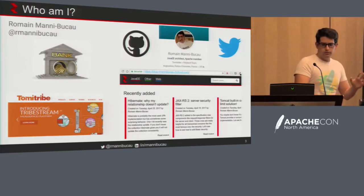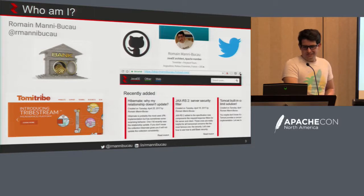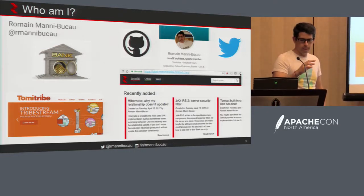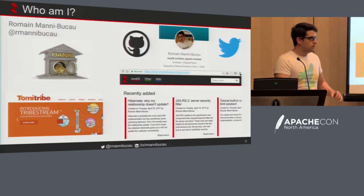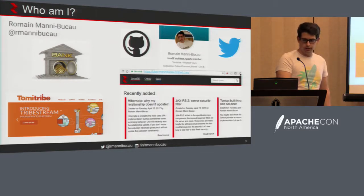Who am I? My name is Romain Manibucci. You can hear I'm French. I'm on social networks — Twitter, GitHub, etc. I'm working mainly with TomEE these days, but before I was working in big companies for bank and insurance, between ops and dev teams. I have a blog about Java EE, web technologies, things like that.